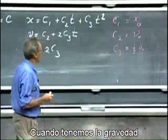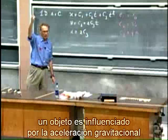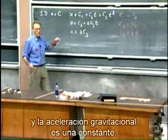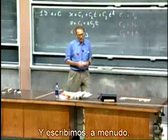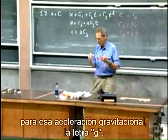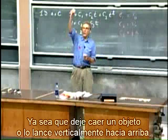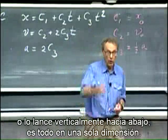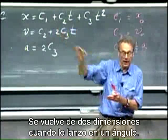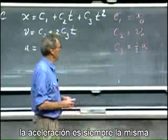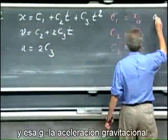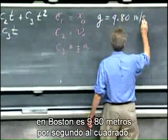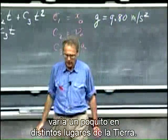When we have gravity, an object is influenced by the gravitational acceleration, and the gravitational acceleration is a constant. We often write that gravitational acceleration as the letter g. Whether I drop an object or throw it vertically up or vertically down, it's all one-dimensional — it becomes two-dimensional when I throw it at an angle. The acceleration is always the same, and that g, the gravitational acceleration, in Boston is 9.80 meters per second squared, and it varies a little bit for different places on Earth.